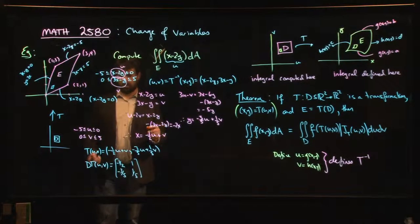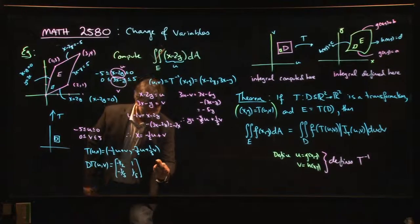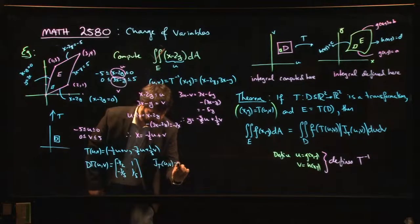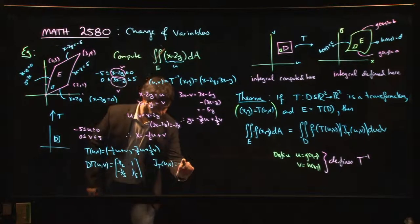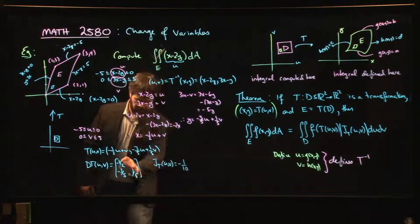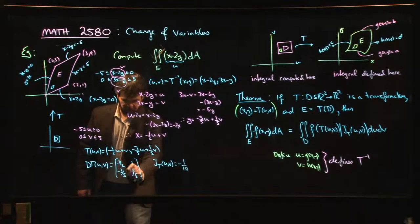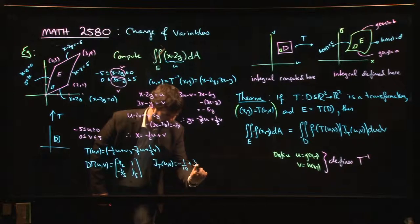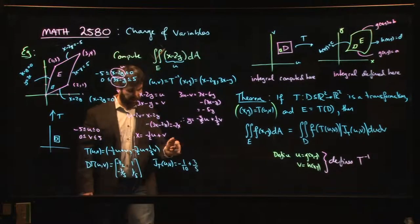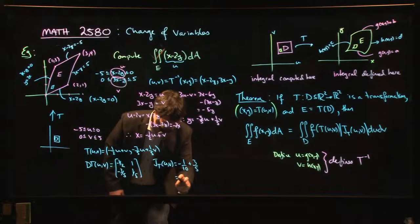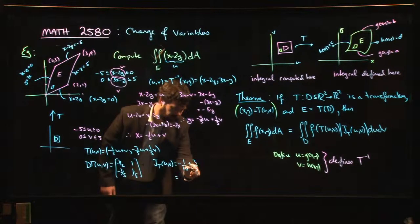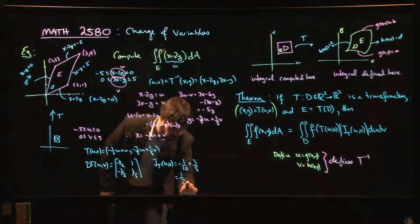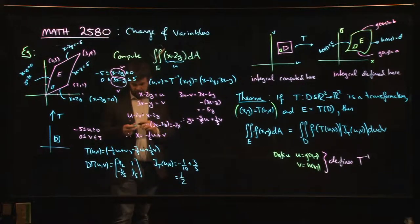The Jacobian is the determinant of that thing. So it's going to be, let's see, minus 1/25 going that way, minus minus, so plus 6/25, which is... 6/25 minus 1/25, 5/25, Jacobian comes out to be 1/5.